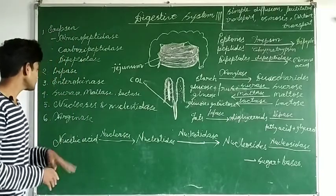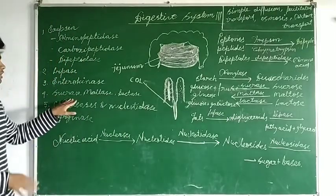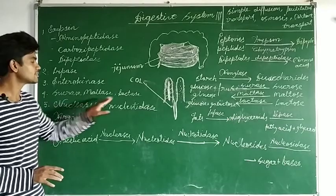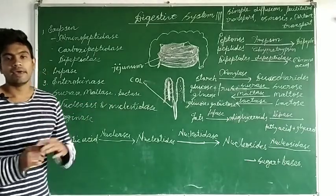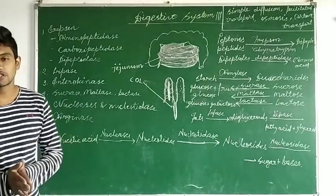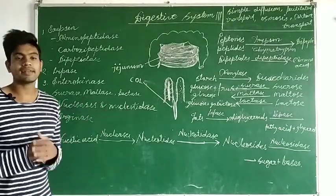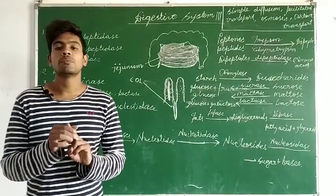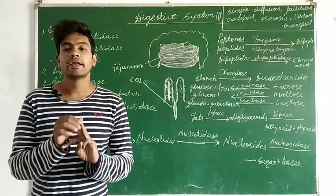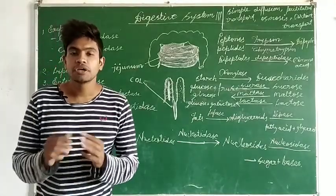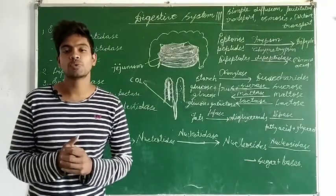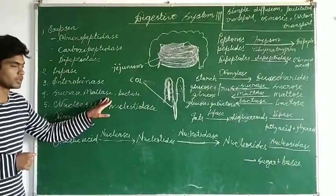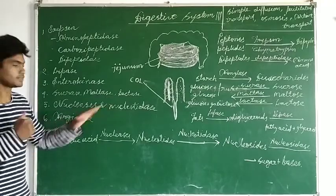The next group consists of sucrase, maltase, and lactase. As the names suggest, sucrase, maltase, and lactase break down sucrose, maltose, and lactose into monosaccharides. In this way they end the digestion of starch or polysaccharides.